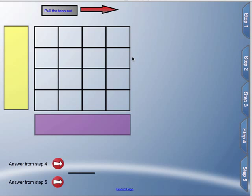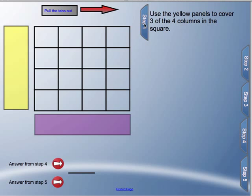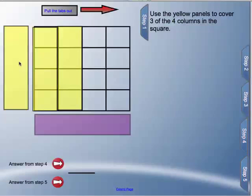Okay, so here we've got our model for multiplying fractions. Remember this whole square right here is going to count as the whole. If I look at my first step, it says use the yellow panels to cover three of the four columns of the square. So I'm going to cover up three of four, or in other words, three-quarters of that shape.